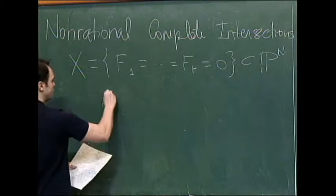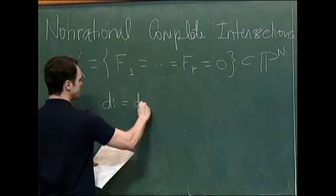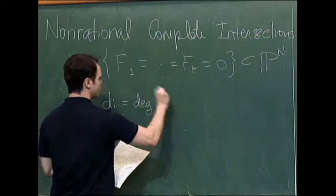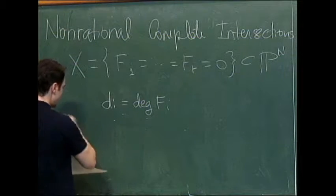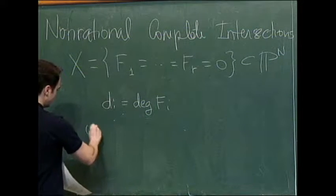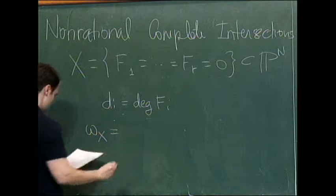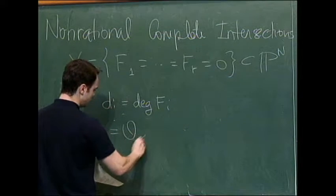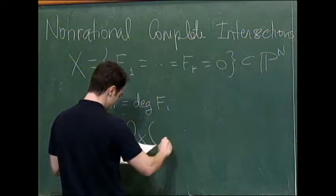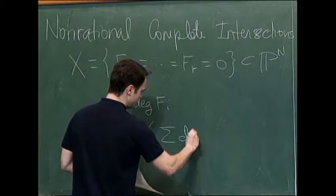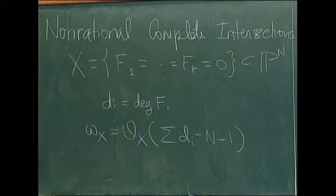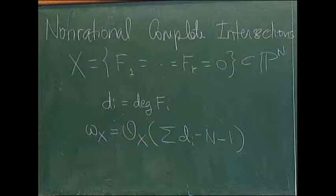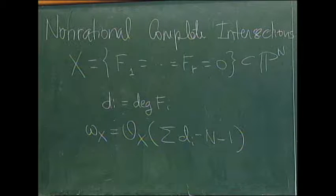So if you have a complete intersection, you write di for the degree of the homogeneous equation corresponding to i, and then you know that the canonical bundle of X is given by this. It's O of the sum of the di minus n minus 1. So this is the canonical bundle, the determinant of the cotangent bundle of X.